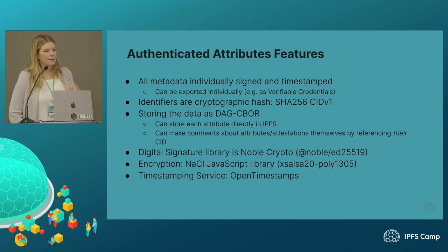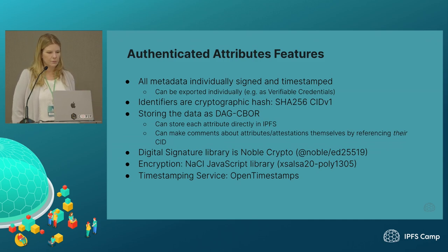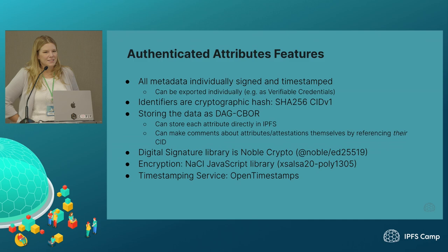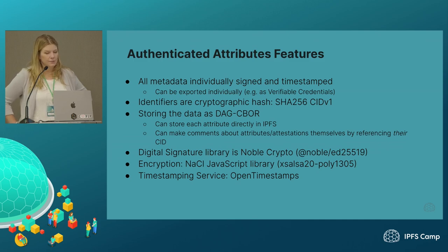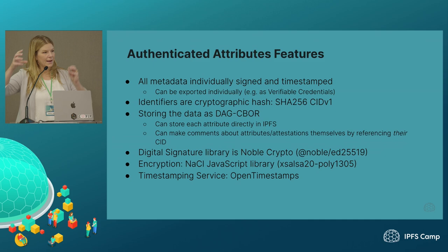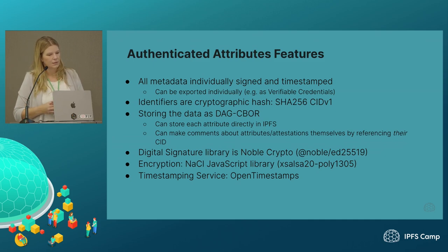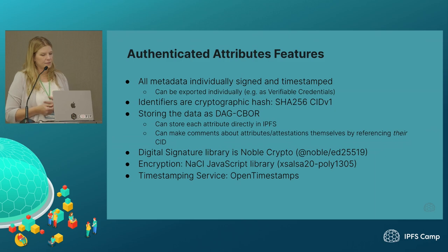Some of the features: all metadata — every one of those attributes — is individually signed and timestamped, and you can export those as verifiable credentials or in whatever format you wish. The identifier is a cryptographic hash, a SHA-256 IPFS CID version 1. Data is stored as DAG-CBOR, which makes it really easy to store directly in IPFS, and you can make comments about an attribute by referencing that CID of the signed and timestamped one. The digital signature library is Noble Crypto, encryption is NaCl, and the timestamping service is Open Timestamps, but any of these can be switched out.